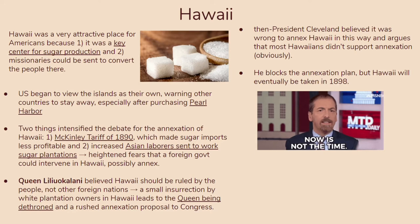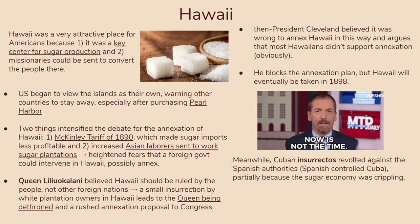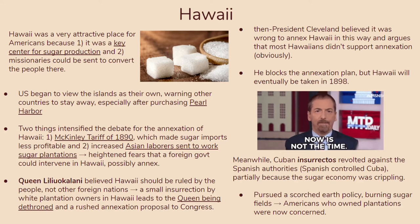Meanwhile, Cuban insurrectos revolted against Spanish authorities, partly because their sugar economy was crippling under Spanish rule. The rebels pursued a scorched earth policy, burning sugar fields and plantations, which upset American plantation owners who were losing a lot of money. That leads us to Cuba — the next place where the US would practice imperialism to a much larger extent compared to Hawaii.